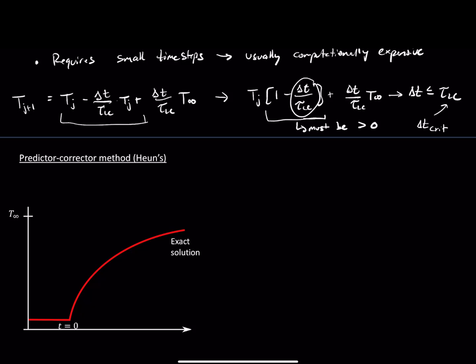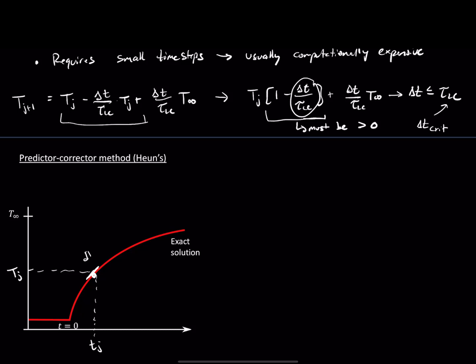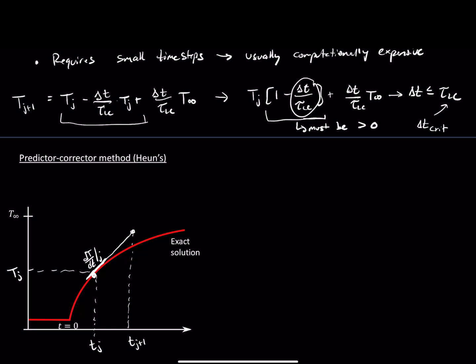The idea behind a predictor-corrector is this. Let's go to our plot here. We choose some time Tj, and at this time we estimate the temperature Tj and the derivative associated with this — dt/dt at j, this derivative here. We can then use that derivative to step forward in time to T at j+1, giving us a new estimate of the state of the system.